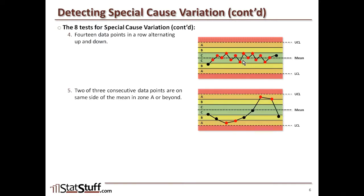The fifth test: at least two of three consecutive data points are on the same side of the mean within Zone A, or beyond. Looking at any three data points, at least two of them fall within the Zone A region.